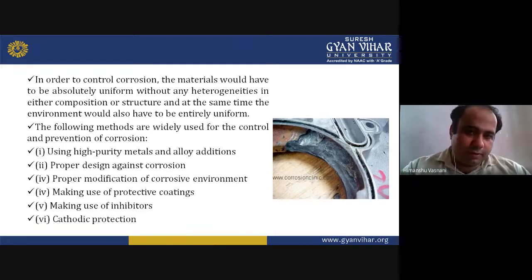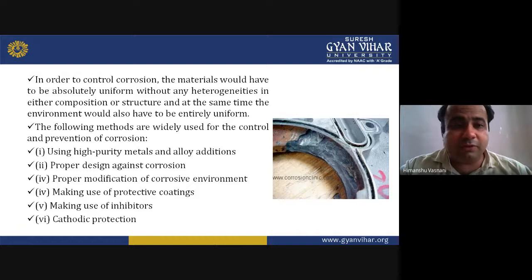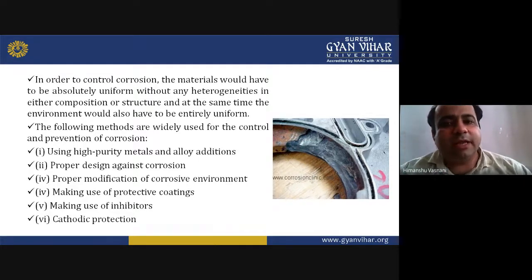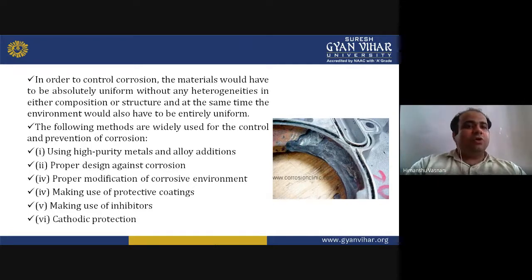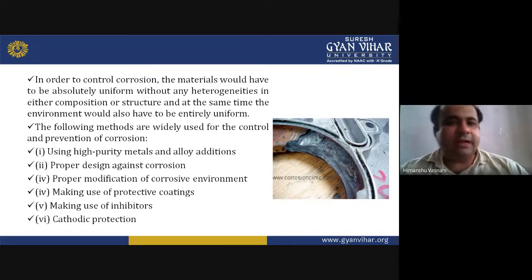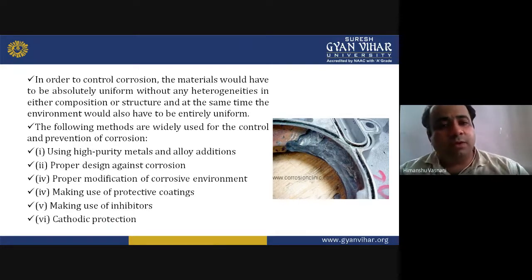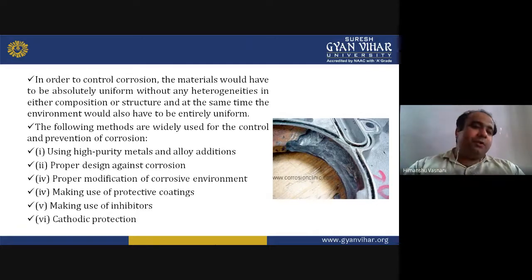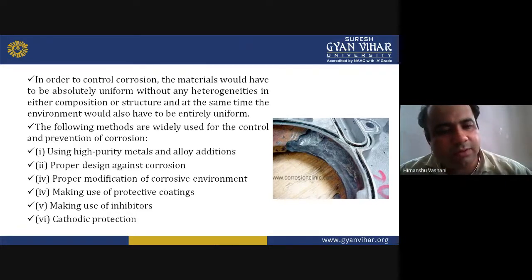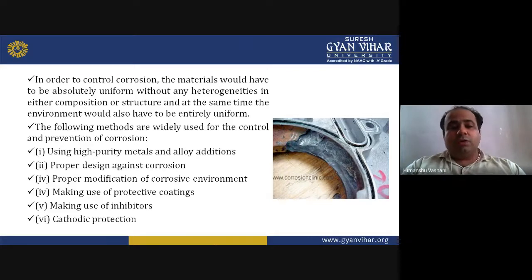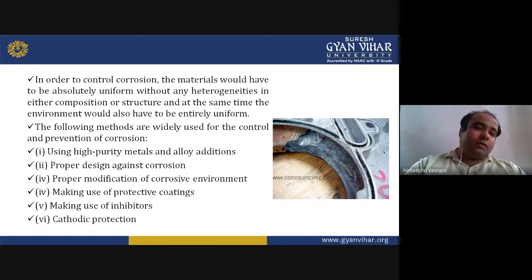To control corrosion, materials must be uniform without any heterogeneities in composition or structure, and the environment must also be uniform. The widely used methods for control and prevention of corrosion include: using high-purity metals and alloy addition, proper design against corrosion, proper modification of corrosive environment, making use of protective coatings, inhibitors, and cathodic protection.